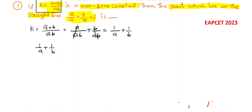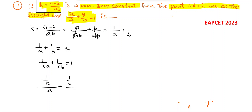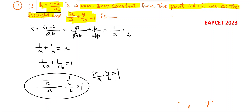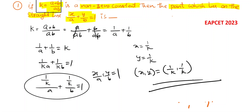From 1/a + 1/b = k, taking k to this side gives 1/(ka) + 1/(kb) = 1, written as (1/k)/a + (1/k)/b = 1. This is in the form x/a + y/b = 1. Equating, x = 1/k and y = 1/k, therefore the point (x, y) = (1/k, 1/k). This is the required answer.